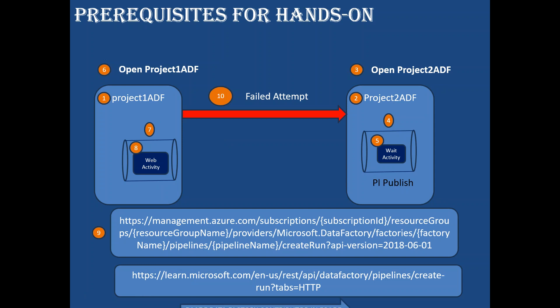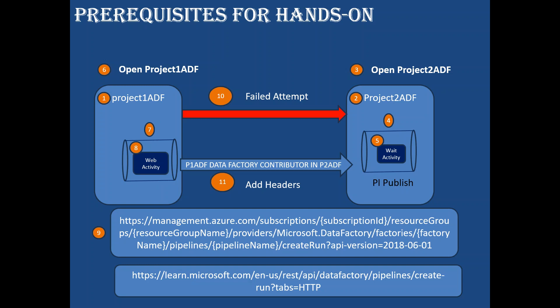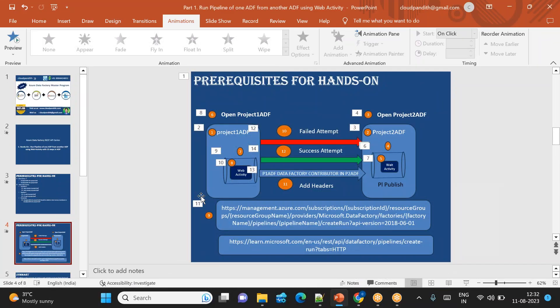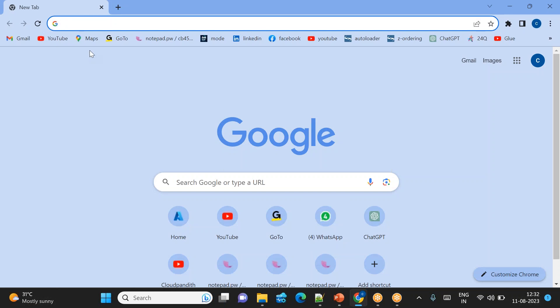We can add the required permission as 'Data Factory Contributor' in Project 2 ADF for Project 1 ADF. We also need to add some headers. Once that is done, the final attempt will succeed. Let's not waste any more time — we'll jump into the portal at portal.azure.com.